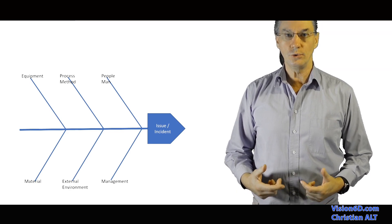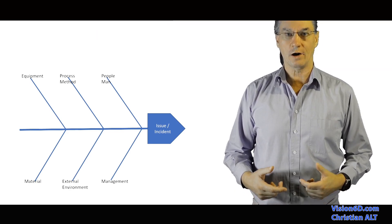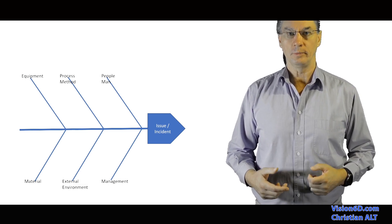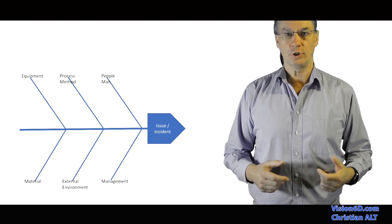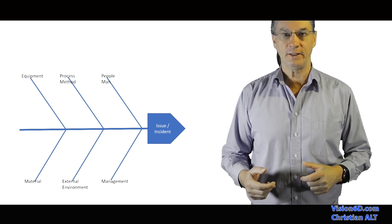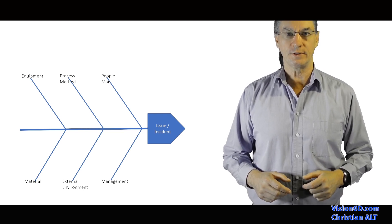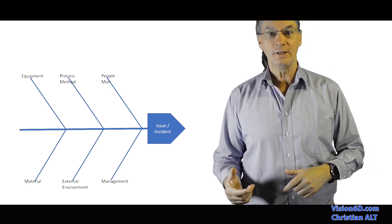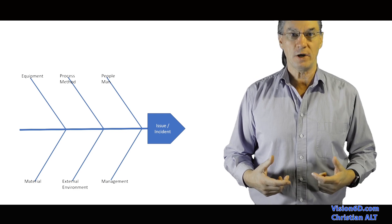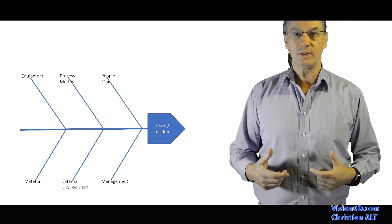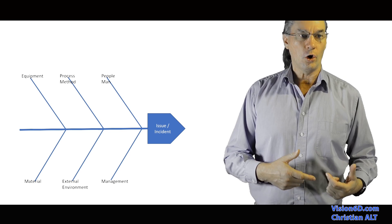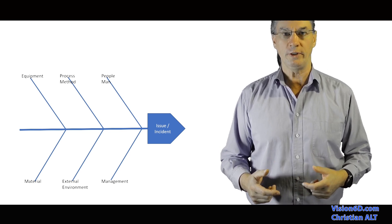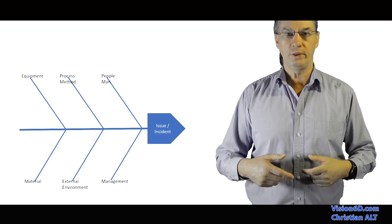The categories we used for our RCA, root cause analysis, are first of all, people. Was there a lack of communication, of understanding how to operate the system, either on the IT side or on the marketing side? So for this, we had some possible causes. Was it in the method we were using? Or maybe in the equipment, was something wrong with the hardware or with the software?